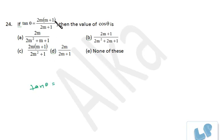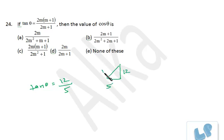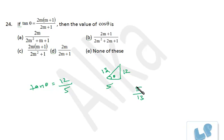Putting m=2: 2 plus 1 is 3, 2 twos are 4... we get 12 and 5. So this side is 12, this side is 5, which means the hypotenuse must be 13. θ is this angle, so cos θ will be 5 by 13.